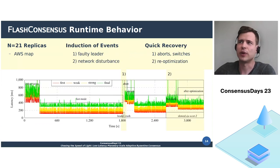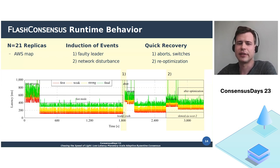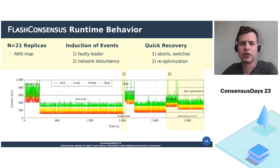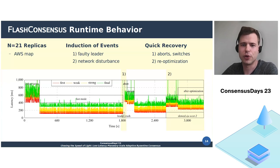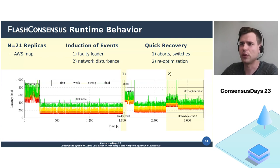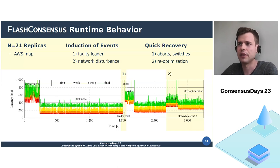In the next experiment, we studied the runtime behavior of the system by inducing events like crashing a leader or creating network disturbances — for instance, by making some replicas slower. Initially, the system needs some time to optimize itself to reach the fast mode, in which it can display significantly faster transaction latencies. After the induced leader failure, the system aborts to the resilient mode, then switches back to the fast mode and re-optimizes itself to achieve fast transaction latencies again. In the second event, we slowed down the new leader, which results in a performance penalty for some time, but eventually the system adapts and re-optimizes itself to choose a faster configuration again.